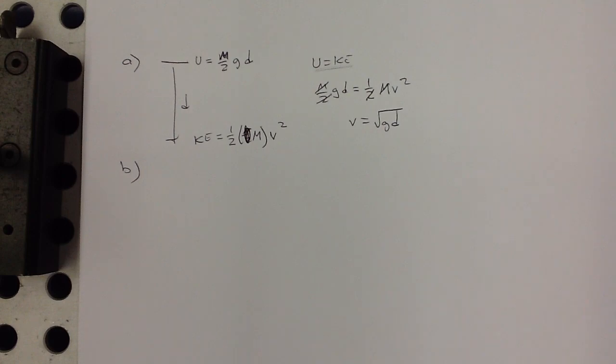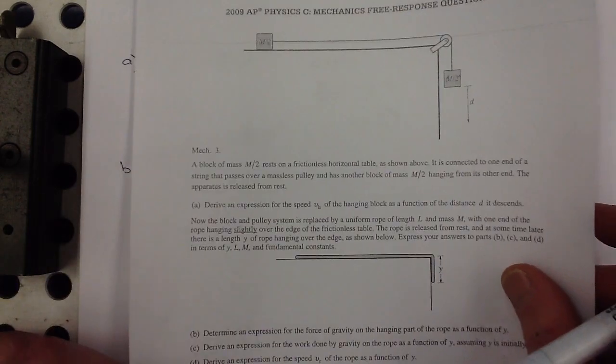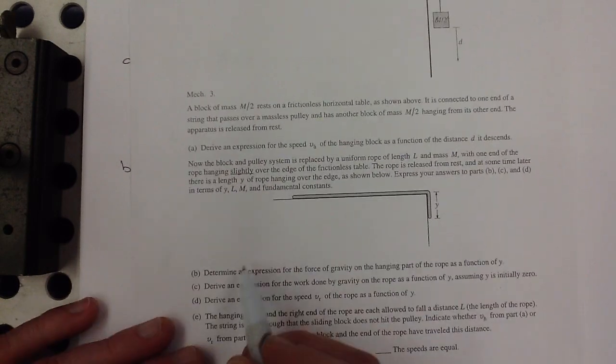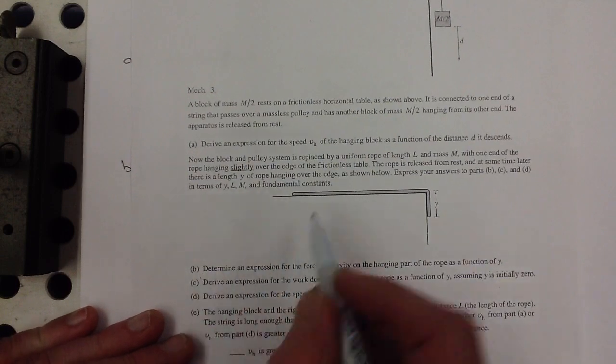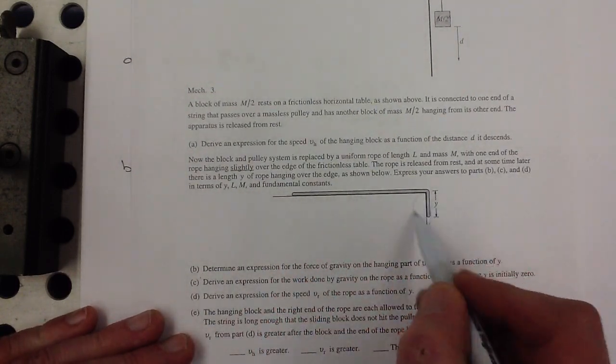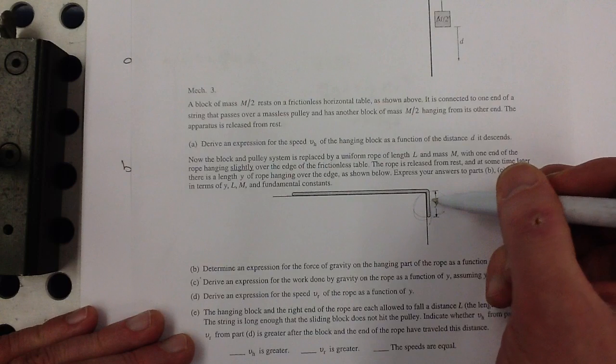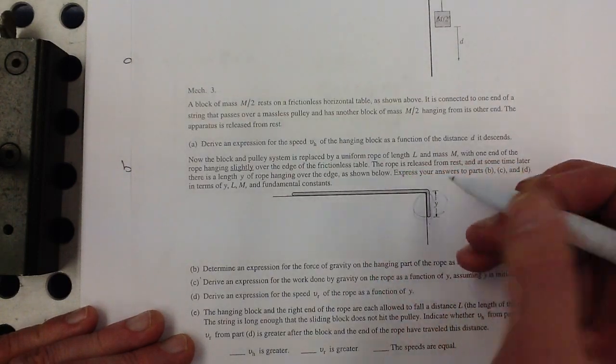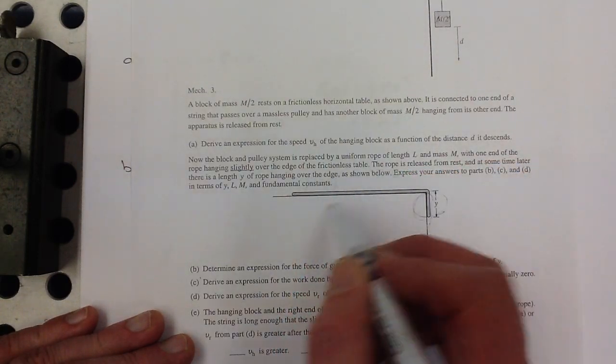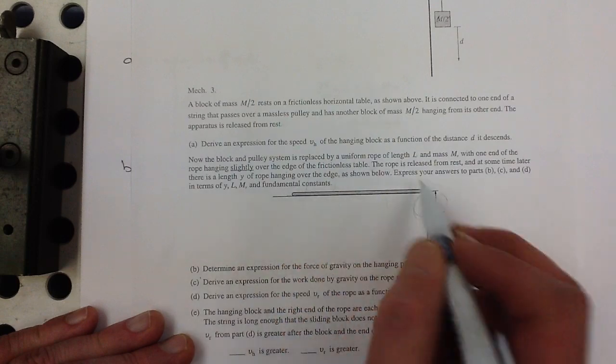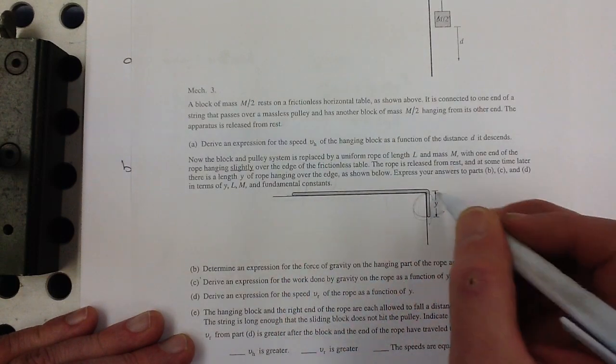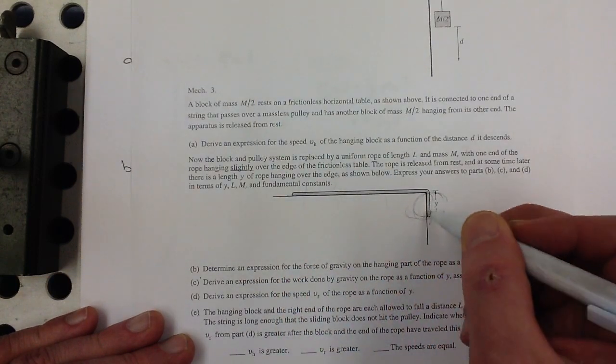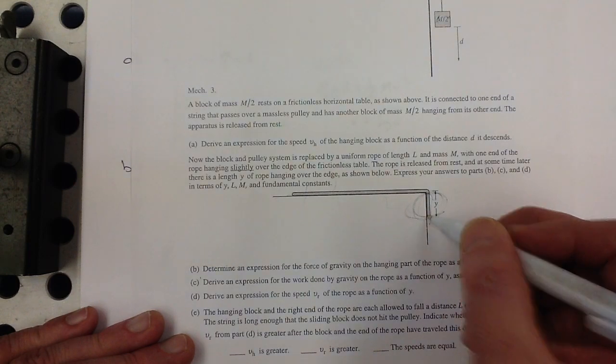All right, part b. Now we've got a rope, right, where there's a bit hanging over the end. This is the only bit. Of course, gravity acts on everything, but the normal force on the rope is going to cancel out the gravity for this part.